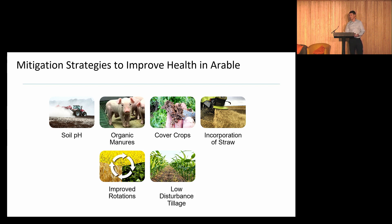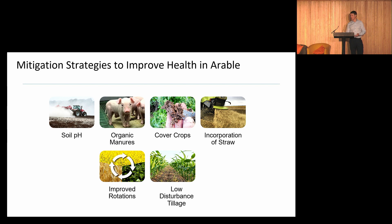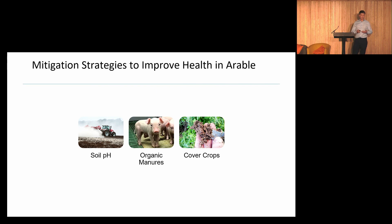The suitability of different strategies depends on farm structure and region. Straw incorporation is less likely in Northern Ireland due to the value of straw as bedding material. Improving rotations can be troublesome due to weather and climate, though potentially doable through more whole crops and intercropping. Low-disturbance tillage or direct drilling is an excellent mitigation strategy, but for it to be successful all previous mitigation strategies must be in place — and in Northern Ireland, weather and scale can push costs up.